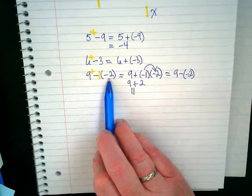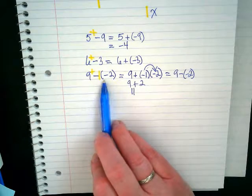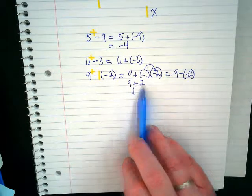Remember identity property - anything multiplied by one stays the same. What's going to change here is the symbol. These two negatives will make this become a positive.